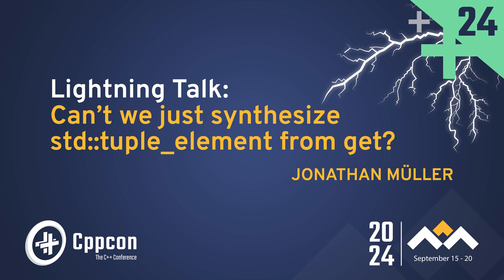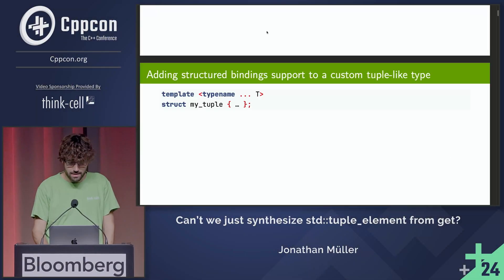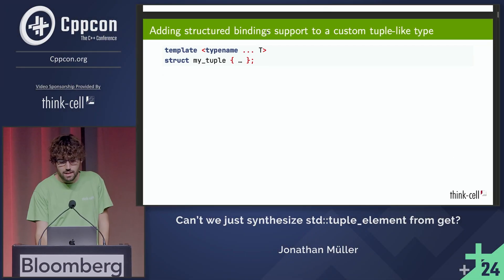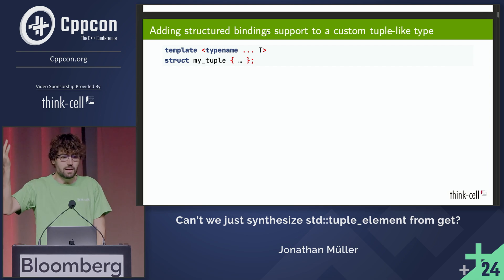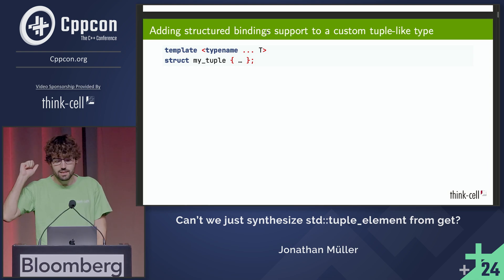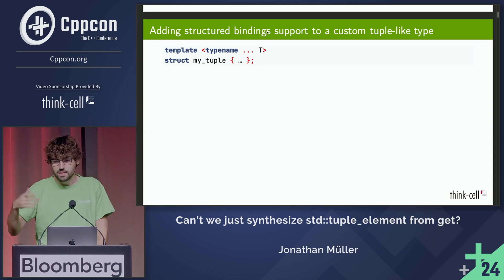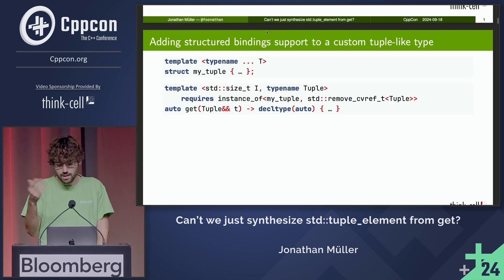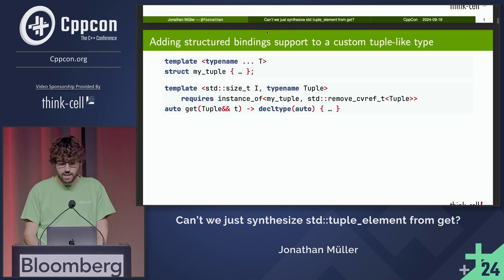So, why does this thing not work? I'm responsible for our core library and as such, I recently needed to add a whole bunch of structured binding support to a bunch of types. So, if you have a custom tuple type or whatever, what you can do is you need to use a specialized get to get the thing.